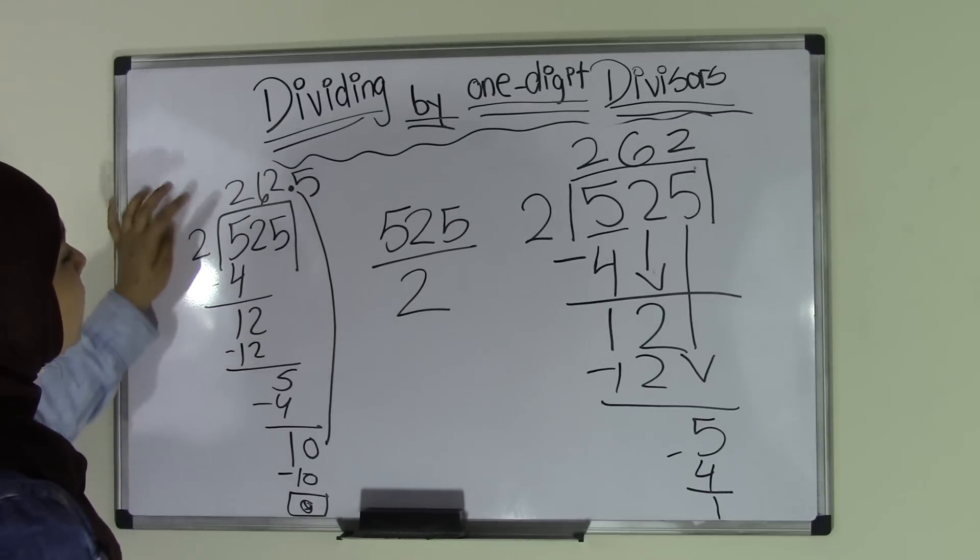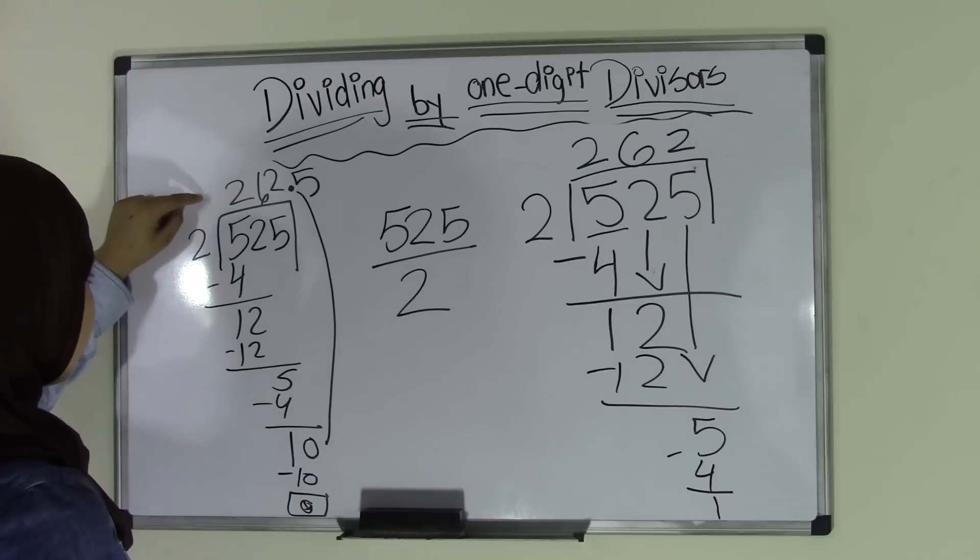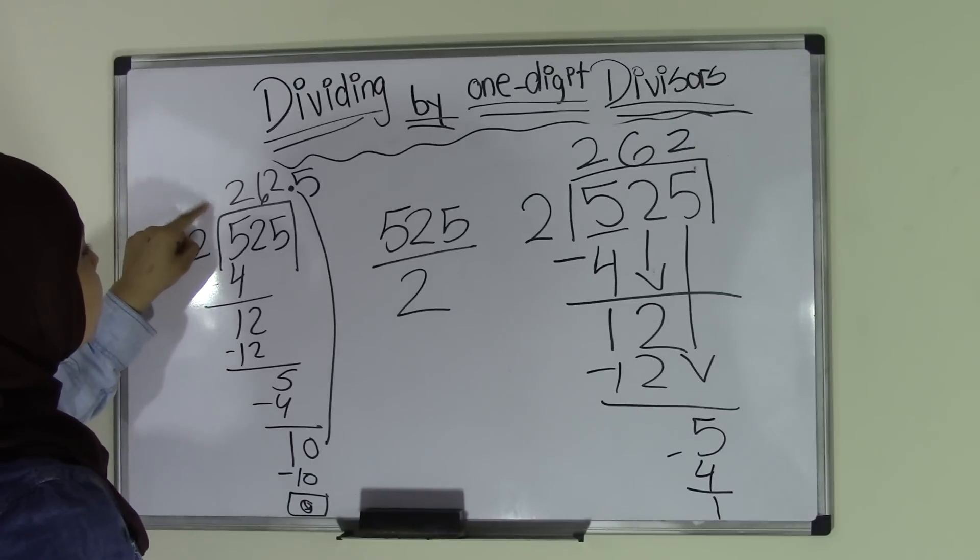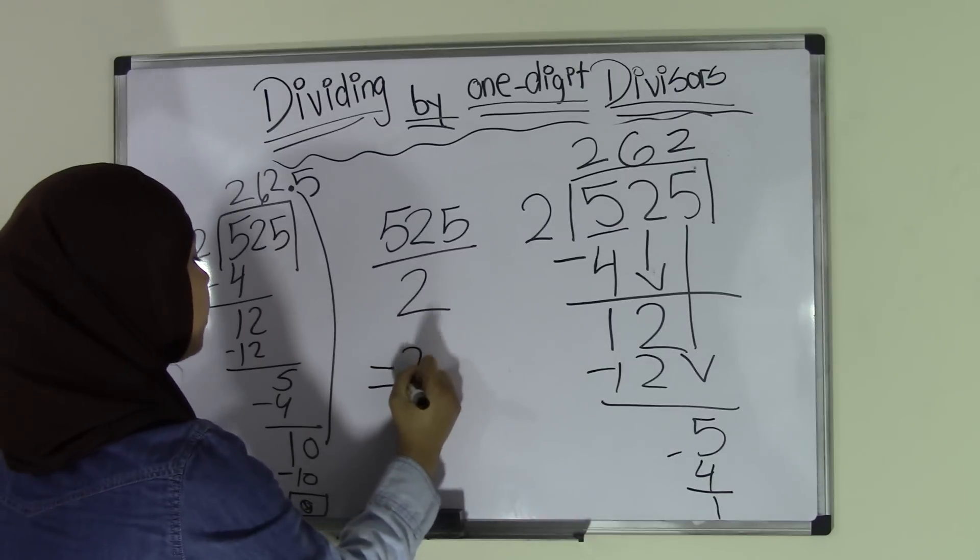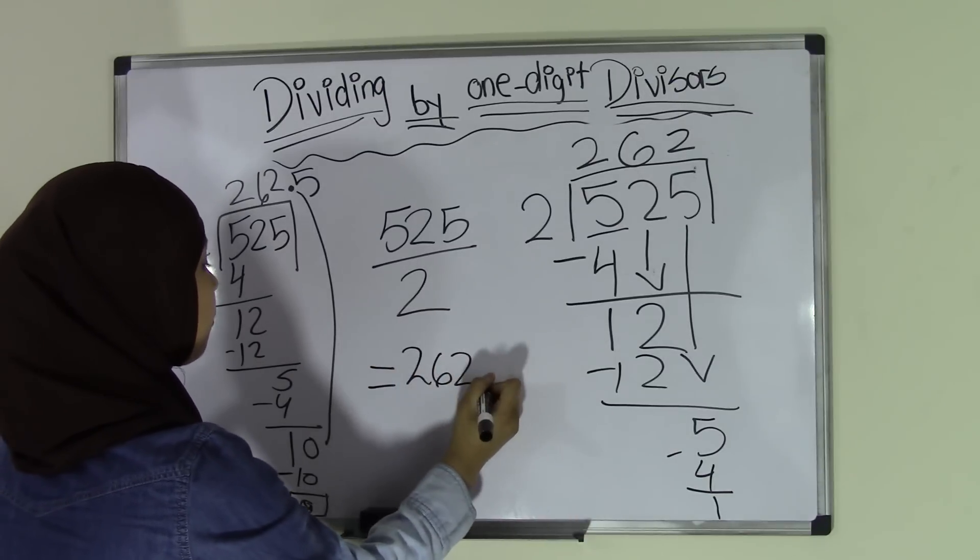That means our quotient equals 262.5. So we're going to go back to our problem and we're going to write 262.5.